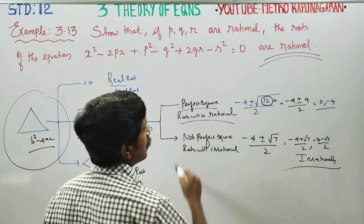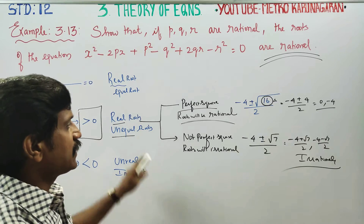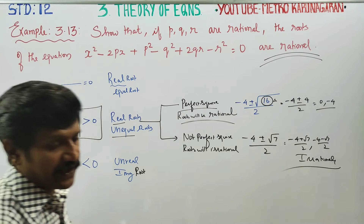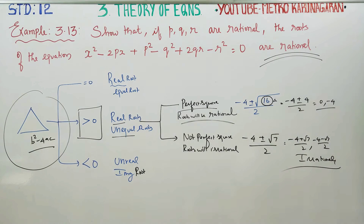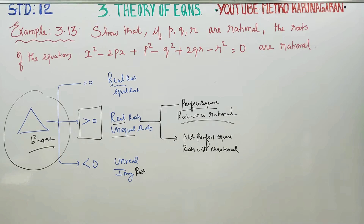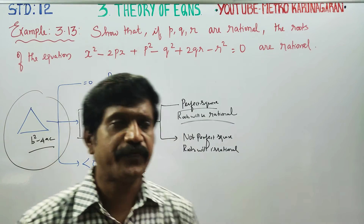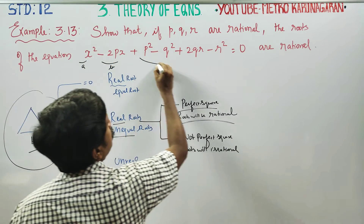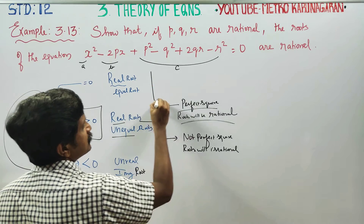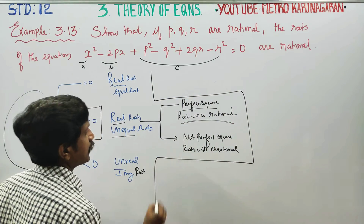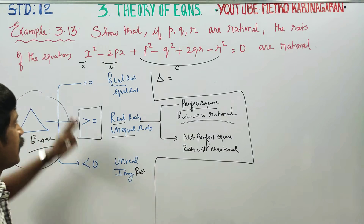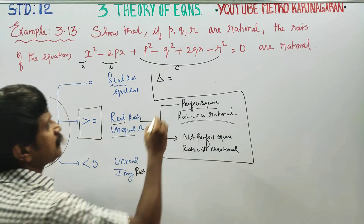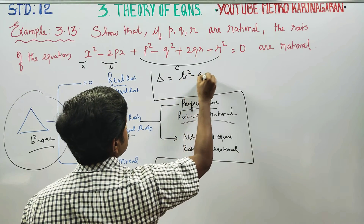This is why we need to show the roots are rational. In this problem, I am going to find the discriminant. First of all, we identify A, B, C — the coefficients. Coefficient of x² is A = 1. Then we have B and C. I am going to compute delta using the formula B² − 4AC.